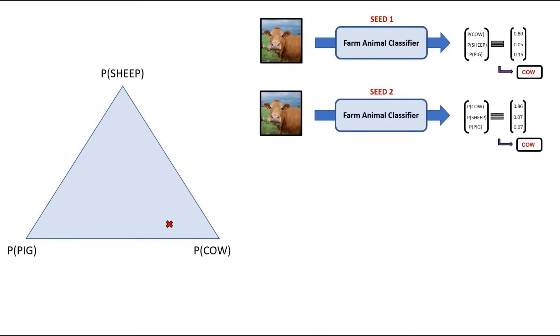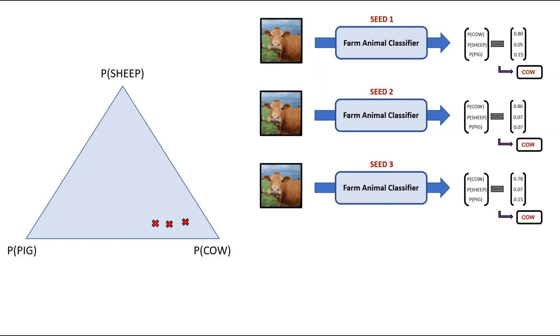Applying the seed 2 trained model on the same cow image, we can see we get a similar probability distribution at the output as the seed 1 trained model. We can also plot this probability distribution on the simplex. Now let's repeat the process for a seed 3 trained model and for a seed 4 trained model.